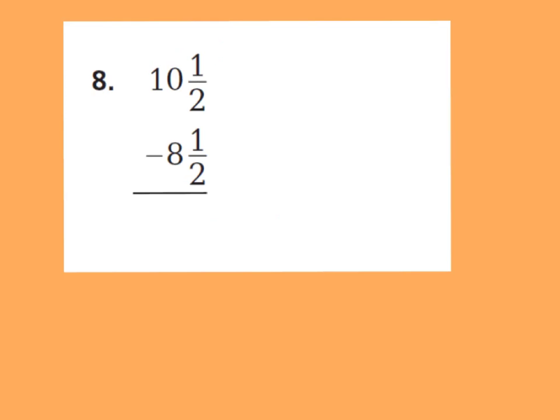What do you do in a case like question number 8, where it says 10 and a half minus 8 and a half? Well, you're just going to go ahead and subtract your fractions. 1 half minus 1 half is 0 halves. So if you have the answer as 0 halves, you really don't have to write anything down because it means nothing — if you had something divided into two parts and 0 is shaded in, nothing is shaded. So I'm just going to leave my fraction amount alone and focus on my whole numbers. 10 minus 8 is 2, so 10 and a half minus 8 and a half is 2 wholes.